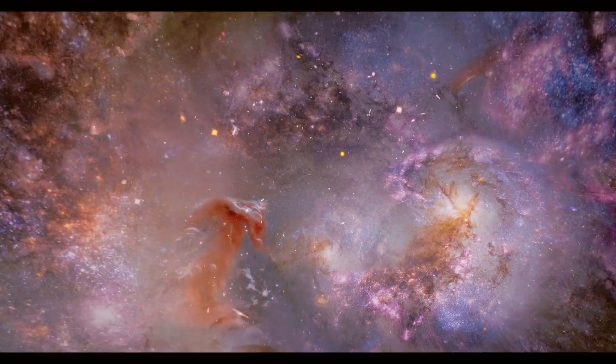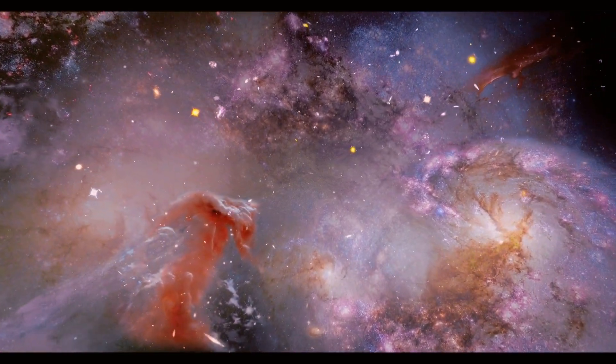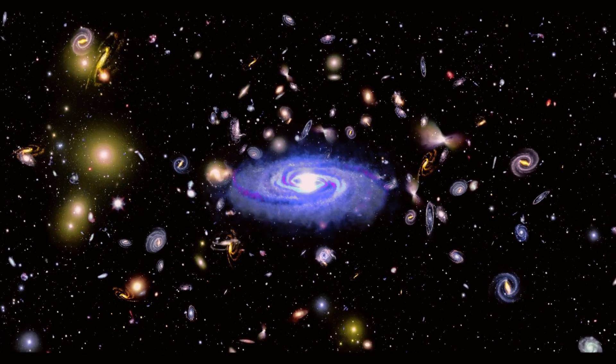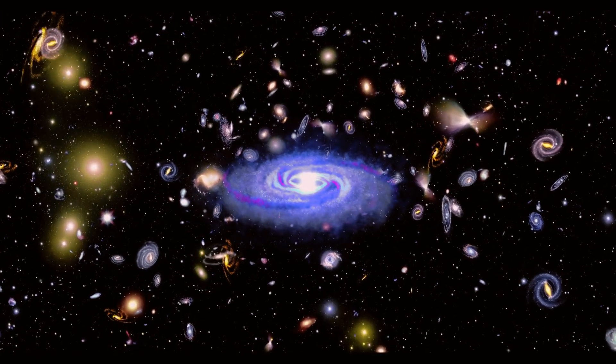Astronomers have classified the majority of galaxies into three main categories: spiral, elliptical, and irregular.